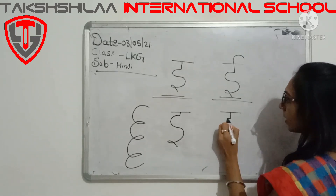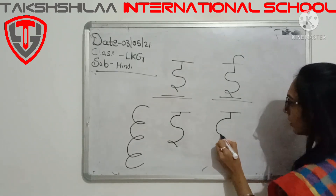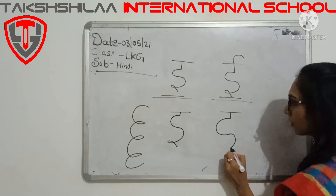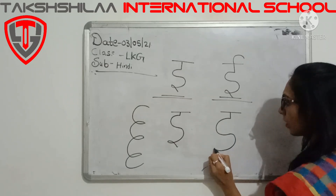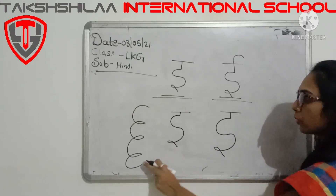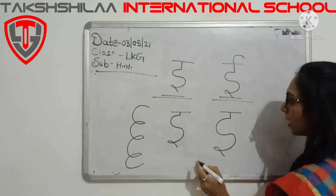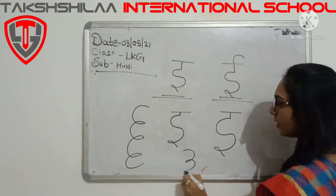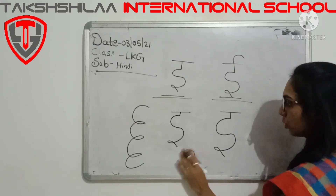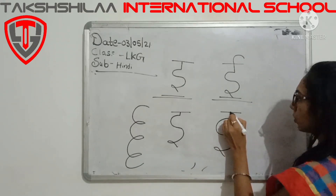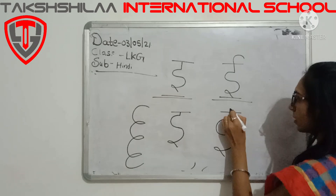अब बनाएंगे कर्व। रुकें। अब इधर से कर्व। और बनाएंगे छोटी सी पूँछ। यह पूँछ बनाना हमने इधर से भी सिखाएगा। ऐसे पूँछ। और बनाएंगे छोटा सा पूँछ।